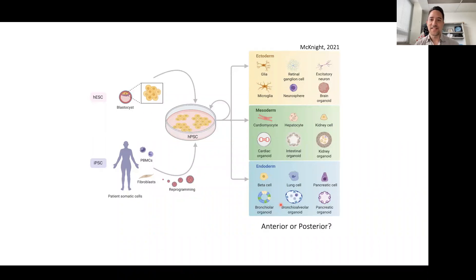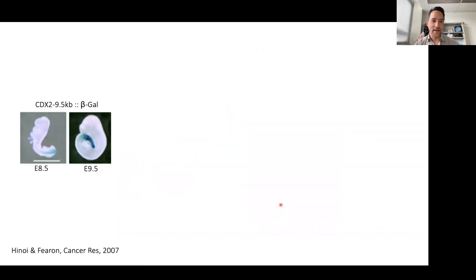But it turns out that these three classifications can also be further subdivided according to where they originated in the body plan. Did they originate from an anterior source or a posterior source? So what do I mean by that?